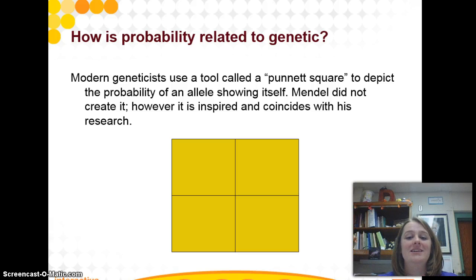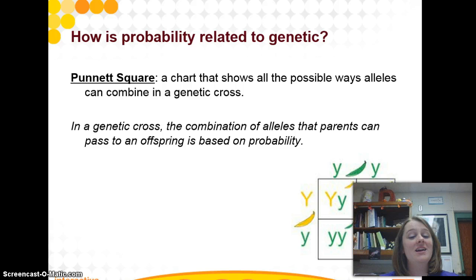That's right, a gentleman by the name of Punnett. Mendel didn't create it; Punnett did, but it coincides with Mendel's research. So the Punnett square is a square divided into four equal sections that tells you all of the possible outcomes of a genetic cross, all the ways that those alleles or those dominant-recessive alleles could potentially combine together to make an offspring.